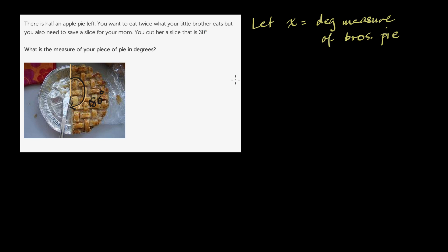And then what would the amount of pie you eat be? Well, it says you eat twice what your little brother eats. So 2x would be equal to what you eat. And it's really the degree measure of what you eat. And then how much does your mom eat? Well, it says you cut her slice that is 30 degrees. So your mom's going to get a 30-degree slice.